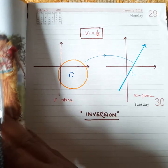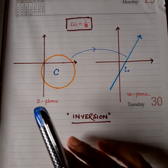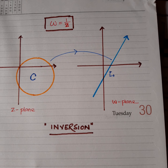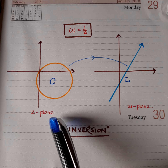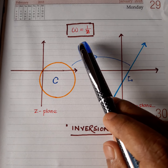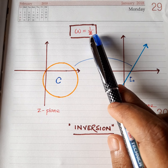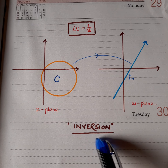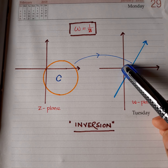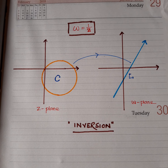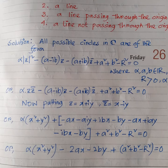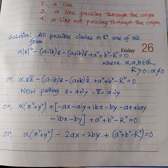So C is a circle through the origin, and therefore its image must be a line not through the origin. If we picturize the given transformation: C passes through the origin in the z-plane, and under the map w = 1/z (also known as inversion), C transforms into a line L that is not through the origin in the w-plane, according to the proposition.